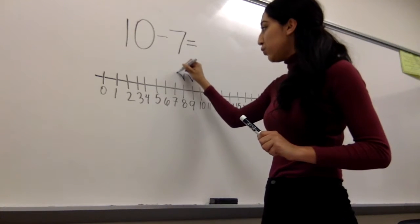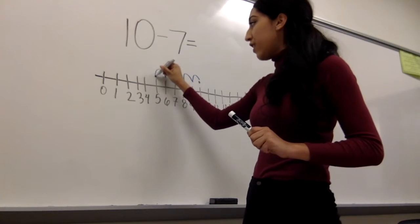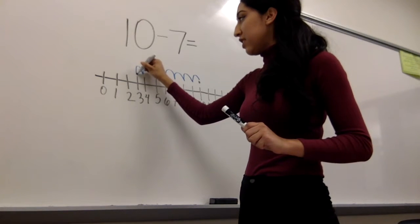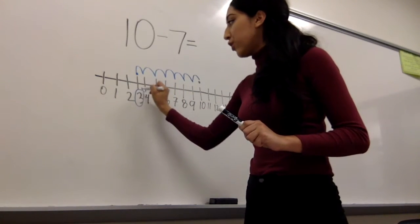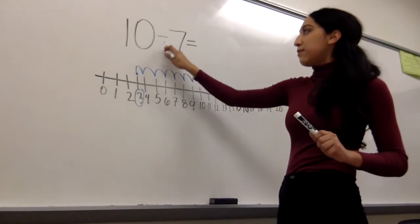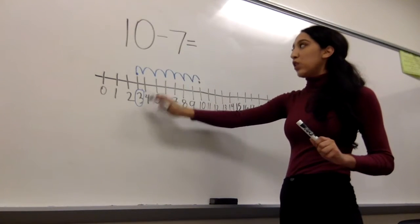1, 2, 3, 4, 5, 6, 7. You will draw your dot. And you will circle your answer. So 10 minus 7 equals 3.